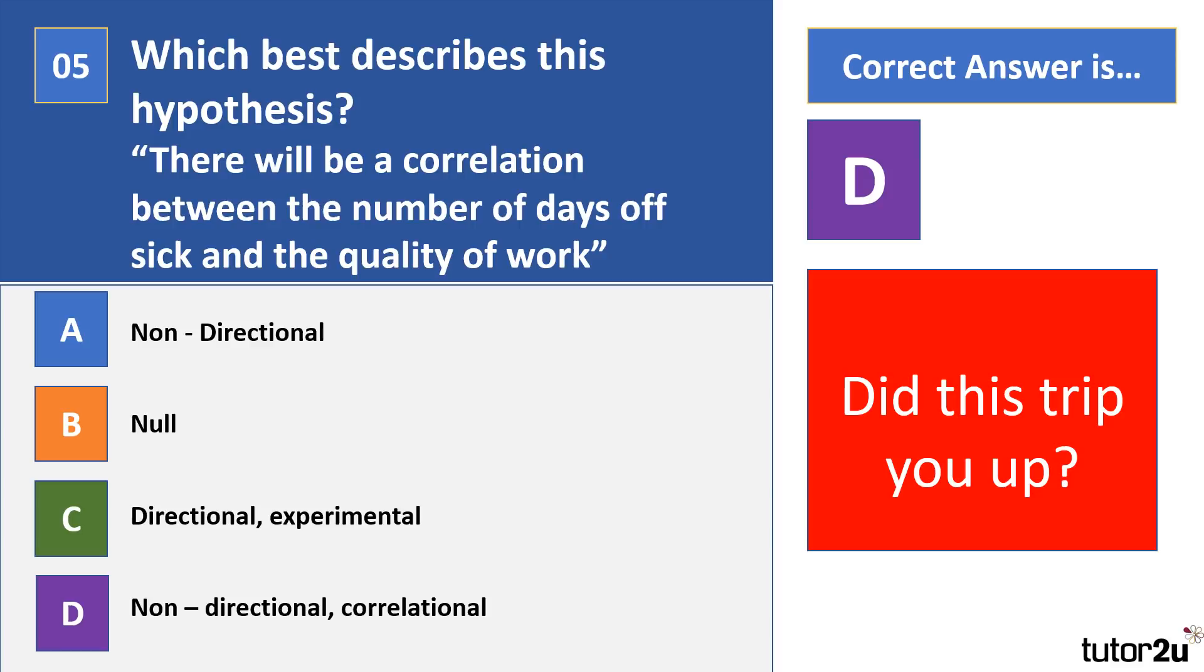Whereas if it's a directional correlational hypothesis, it's either going to state there will be a positive correlation or there will be a negative correlation. Then of course, the null version of that is there will be no correlation. Be wary, and this question here is just really to show you that correlational hypotheses are worded differently from the experimental ones.